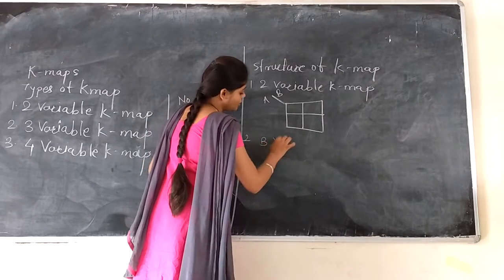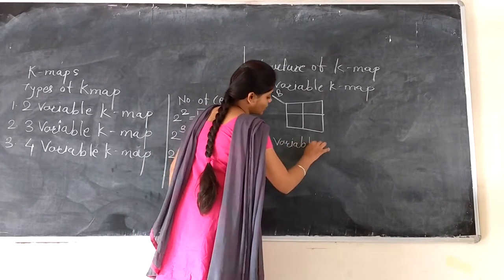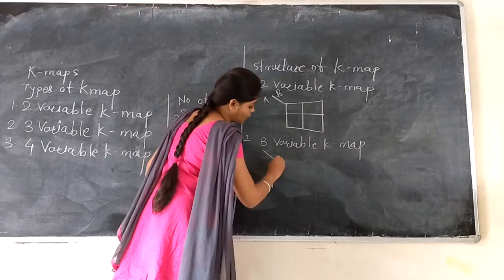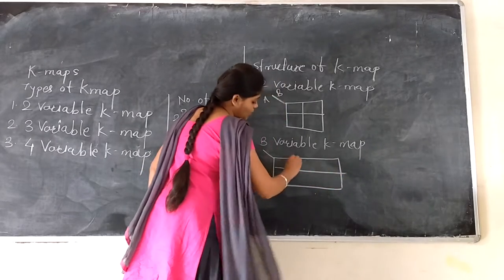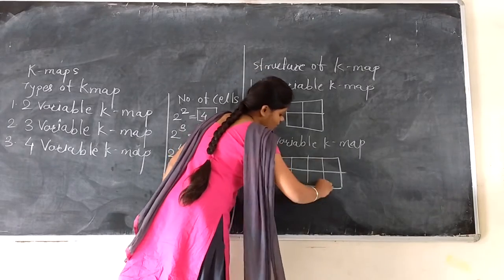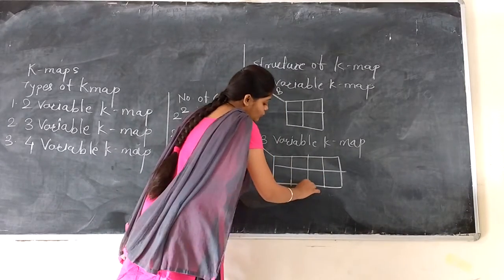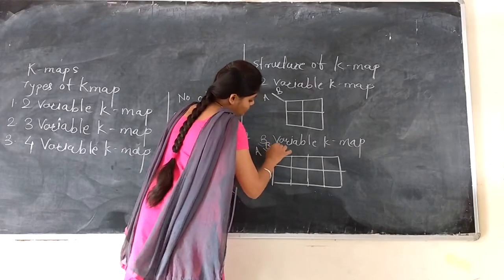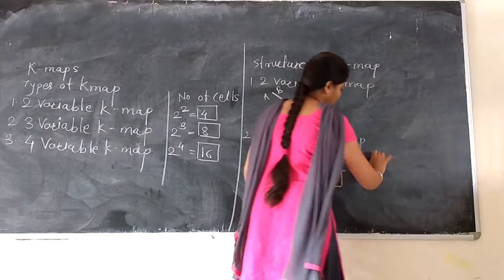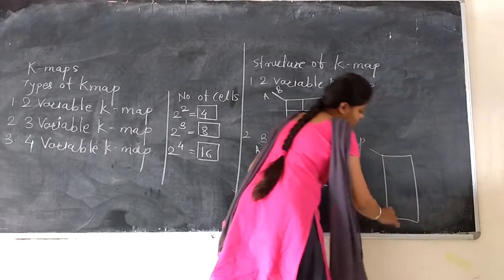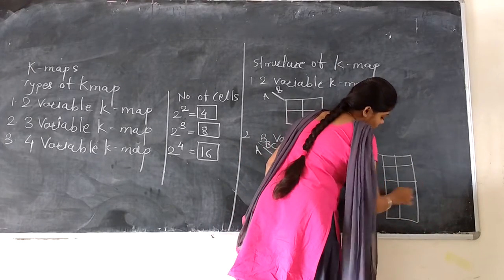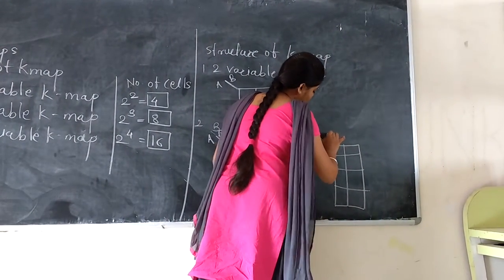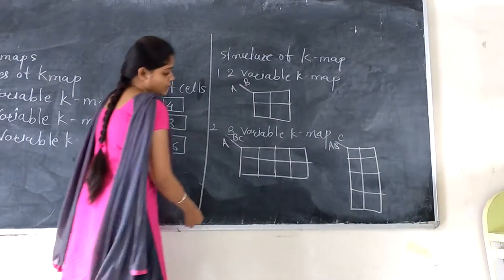Then, second is three variable K-map. As discussed earlier, three variable K-map requires eight cells. So eight cells are divided as two rows and four columns. One variable is represented on rows and two variables are represented on columns. Then, for four variable K-map, you can divide it as four rows and four columns.